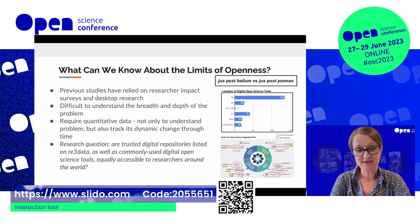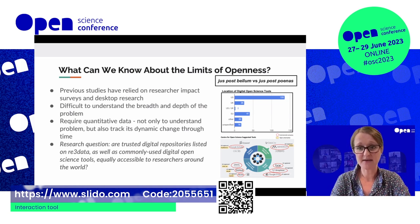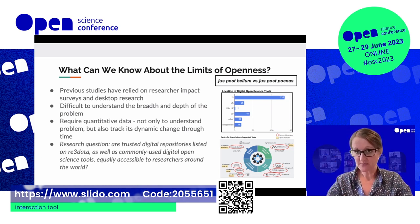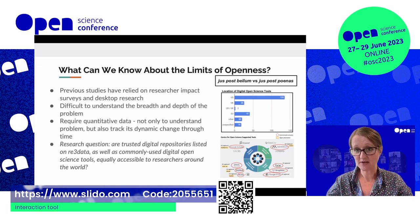Recognizing that we needed more information on this topic, my collaborator Hugh Shanahan and I posed the question: are trusted digital repositories listed on Re3data, as well as other digital open science tools, equally accessible to researchers around the world? We're not making any value judgments about this — we just wanted to know, are they equally accessible? Can we, as an open science community, pride ourselves on the fact that we are achieving our goals of making research data and resources equally available to researchers and users around the world, free from any financial or other barriers?